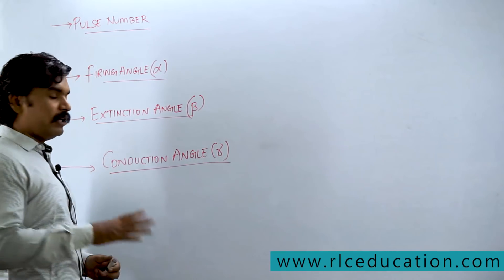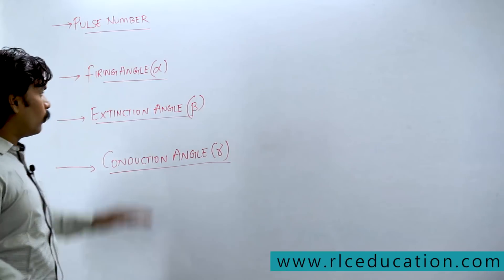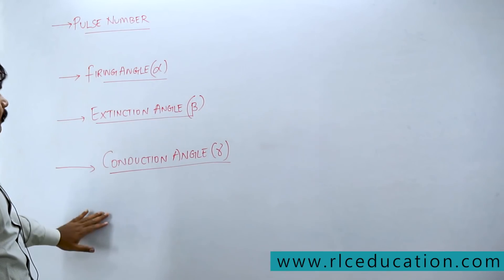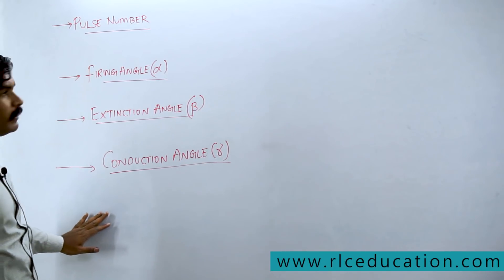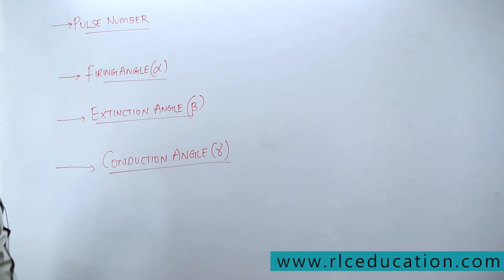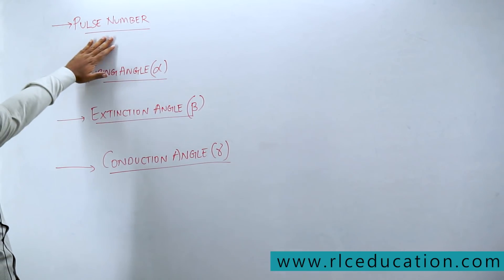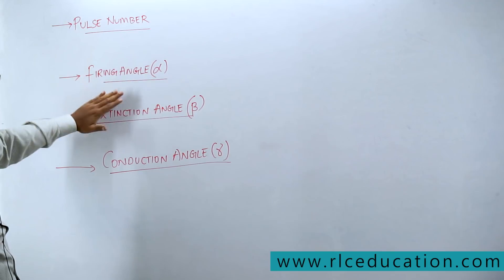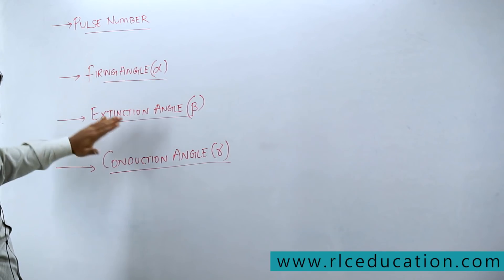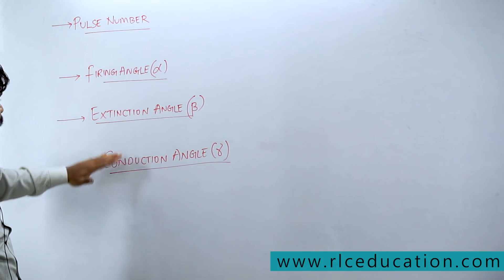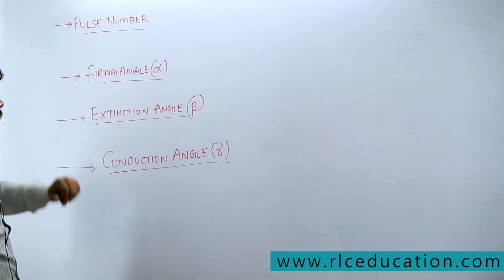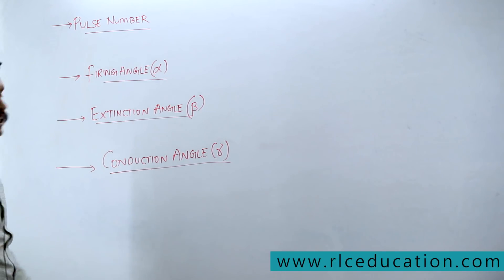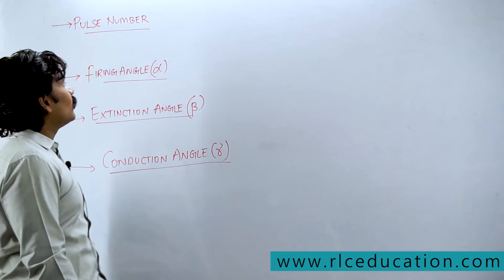Before moving forward, I want to discuss four important terminologies associated with rectifiers: pulse number, firing angle, extinction angle, and conduction angle.